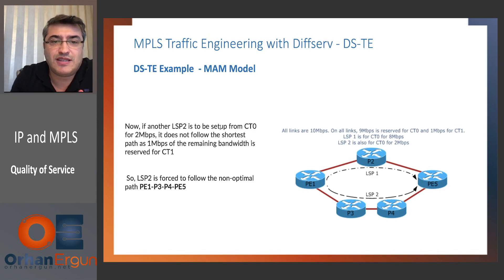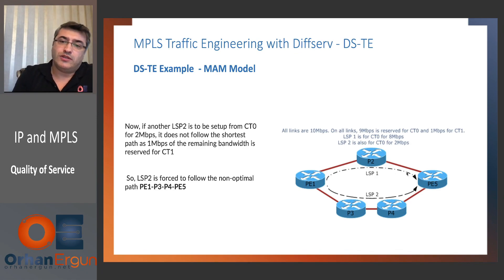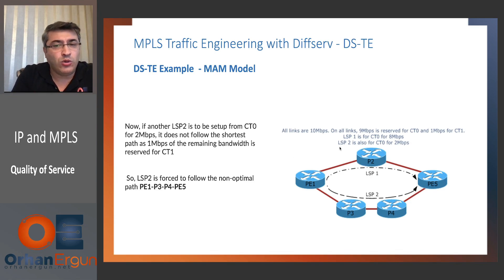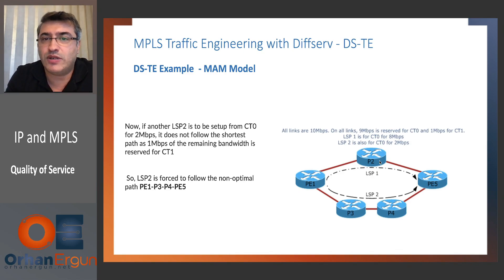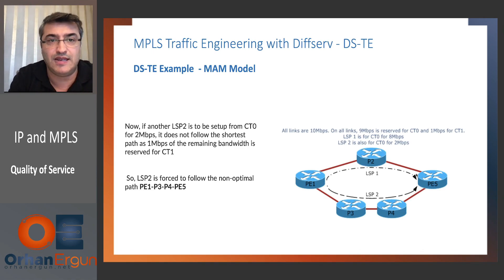Now if another LSP is to be set up from CT0 for 2 MB, it doesn't follow the shortest path, because 1 MB of the remaining bandwidth is reserved for CT1. CT1 was 1 MB, and we already used 8 MB from CT0. Although 10 MB is the total capacity and we used 8 MB leaving 2 MB, we cannot use it. Although we didn't set up any CT1 LSP yet, we will not give that capacity to LSP2. We are reserving it for CT1.